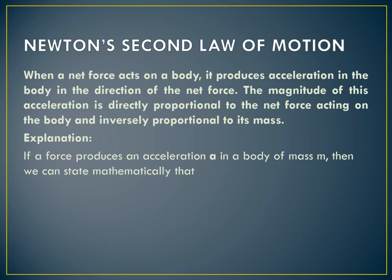According to Newton's second law of motion, when a net force acts on a body it produces acceleration in the body in the direction of the net force. The magnitude of this acceleration is directly proportional to the net force and inversely proportional to the mass of the body. Greater force produces greater acceleration, and less force produces less acceleration. Also, acceleration is inversely related with mass — if the same force is applied on two different masses, the smaller mass will have greater acceleration and the larger mass will have less acceleration.